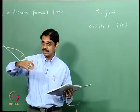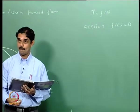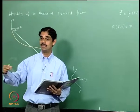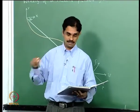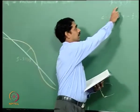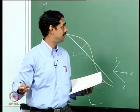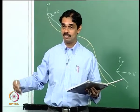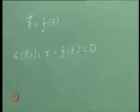If I define a function r minus f of t where f of t is the location of the flame at any instant, this just means the location of the flame is changing in time. If I define a function like this, it has to be zero at the flame — so g going to zero is the flame. If it is not zero, it is on one side or the other side of the flame. We have to track the g equal to zero surface.